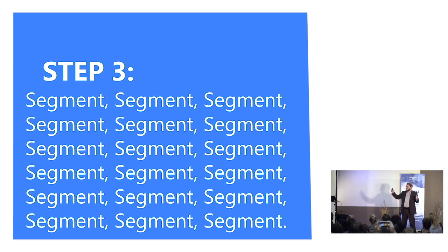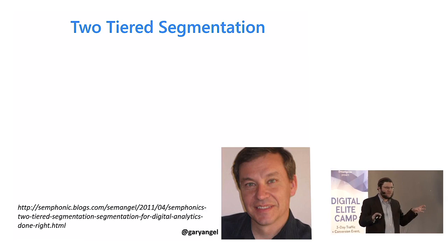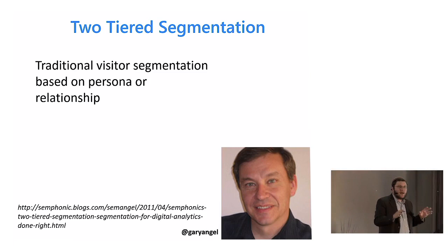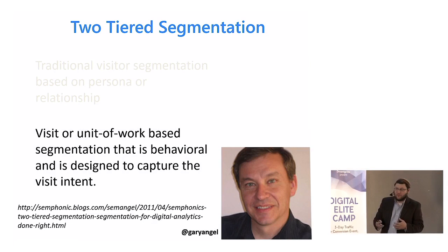Gary Angel — I think he's like the king of digital analytics. He wrote a new book, and his blog Measuring the Digital World is highly recommended. He talks about two types of segmentation: one is your traditional visitor or persona-based segmentation — this is who you are — in relationship to your unit of work, which means behavioral, what it is that you're doing. Two levels of being able to segment.